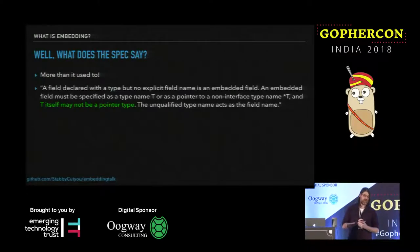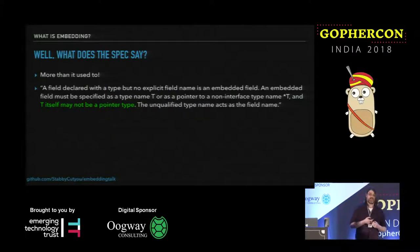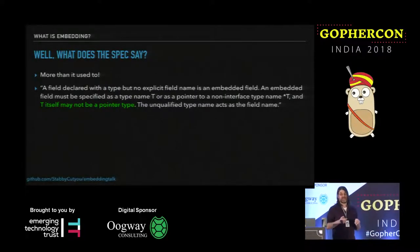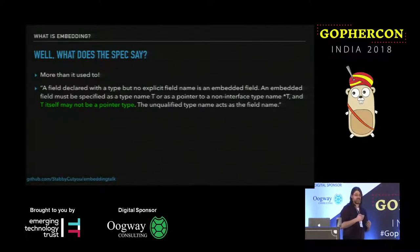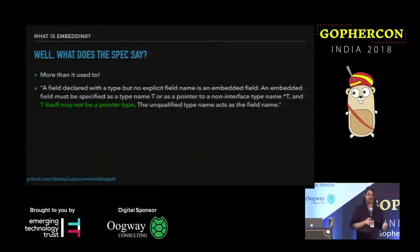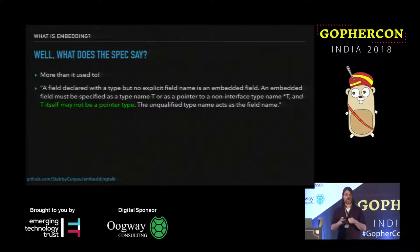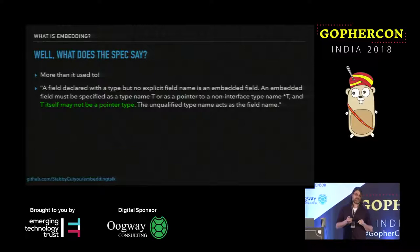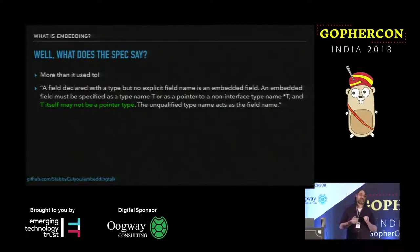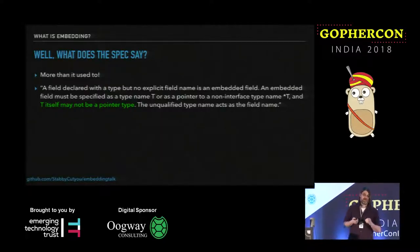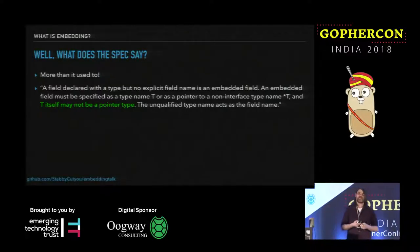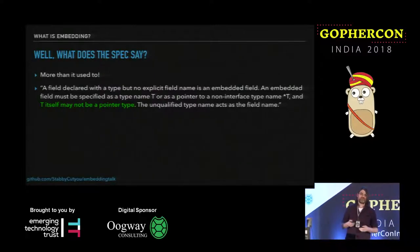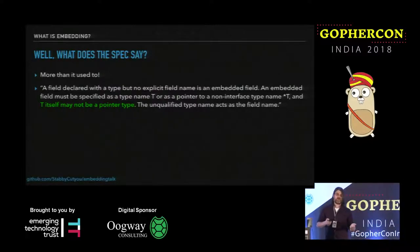What does the spec actually say? It says: a field declared with a type but no explicit field name is an embedded field. An embedded field must be specified as a type name T, or as a pointer to a non-interface type name T (star T). And importantly, T itself may not be a pointer type. The unqualified type name acts as the field name — if you have a package P that exposes a type T, P.T is the fully qualified name, but T is the unqualified name.